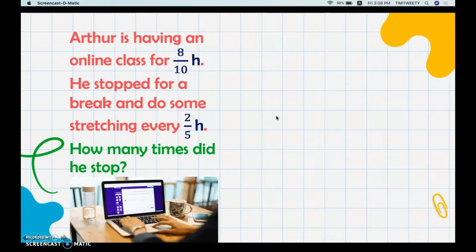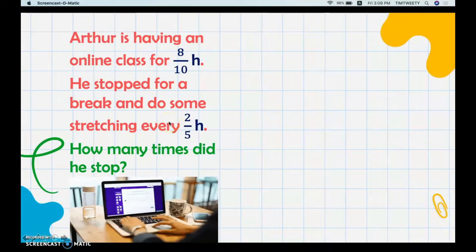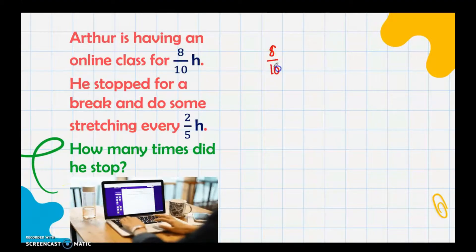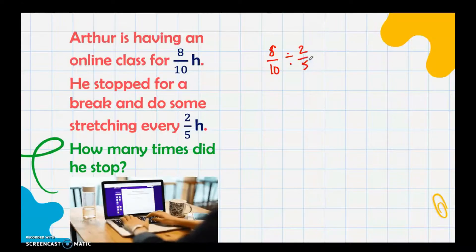Let's solve the story problem. Arthur is having an online class for a total of 8/10 of an hour. Every 2/5 of an hour he stopped. To find how many times he stopped, we are going to divide. We need to be careful about what is the dividend and what is the divisor. The total, 8/10, is our dividend, and we divide by 2/5.